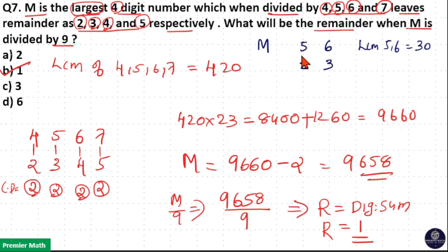Now divisible and remainder difference, take the common difference. 5 minus 2 is 3, and 6 minus 3 is 3. Now common difference is equal to 3, so subtract the common difference from the LCM.